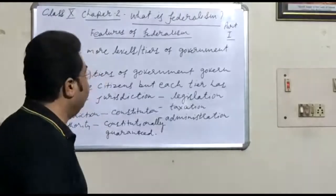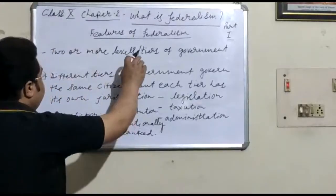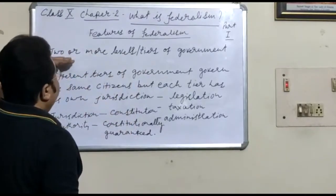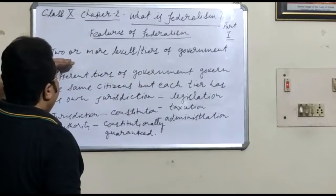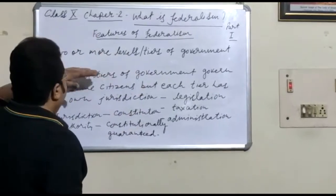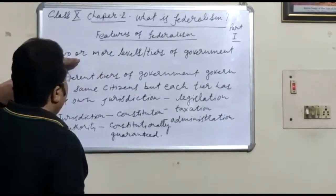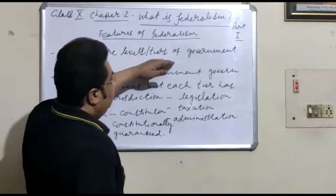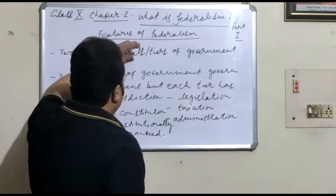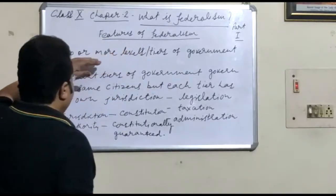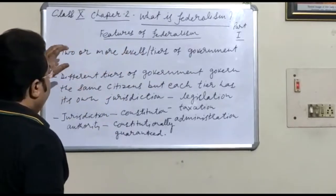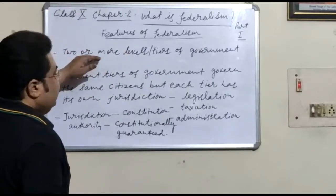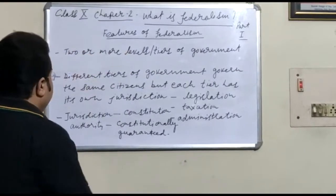The first feature of federalism is that the powers are divided at two different levels — two or more levels or tiers of government. Powers are divided at the central level and the state level.